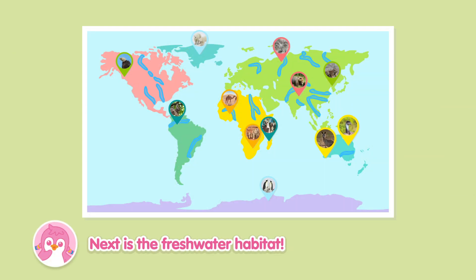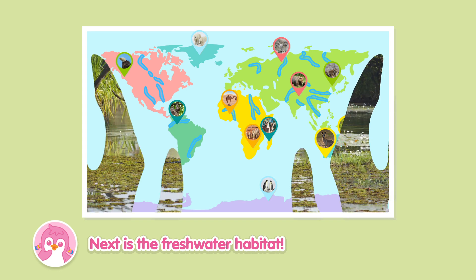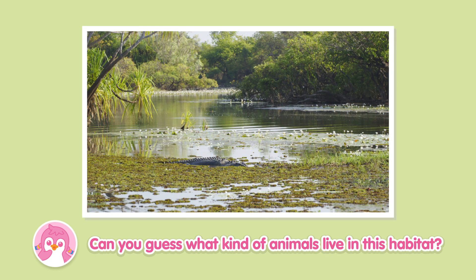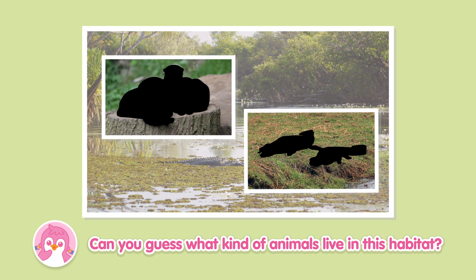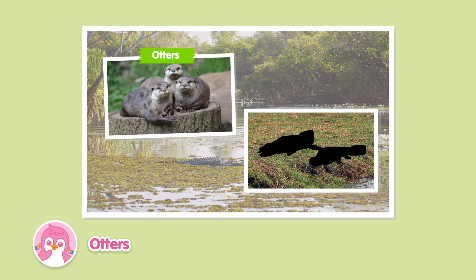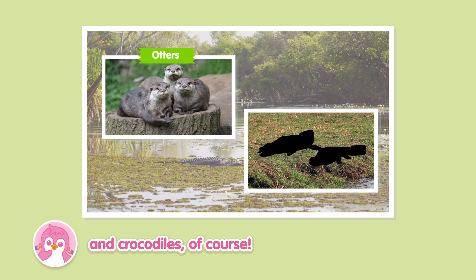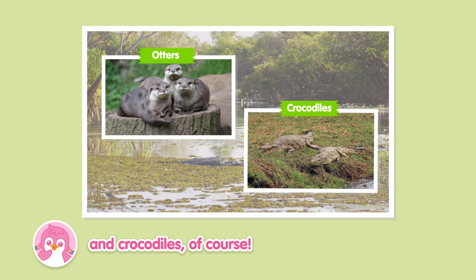Next is the freshwater habitat. Can you guess what kind of animals live in this habitat? Otters and crocodiles, of course.